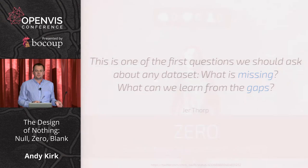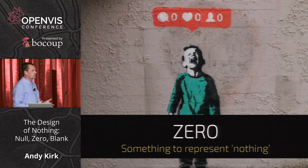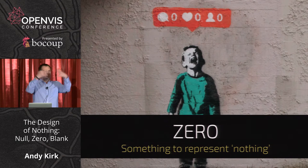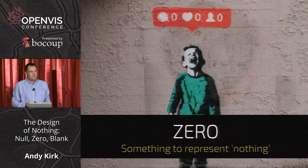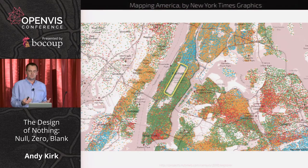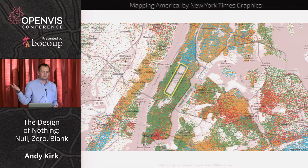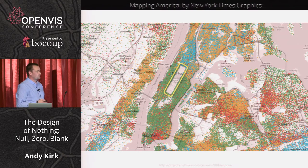On zeros: we're talking about the challenge of representing nothing — how do we give physical form to the absence of amounts, the absence of magnitude? Often the judgement of zeros requires local context or local knowledge. The fact that we all know Central Park is in the middle of New York makes it far easier to explain that big rectangular gap in the census map of New York.